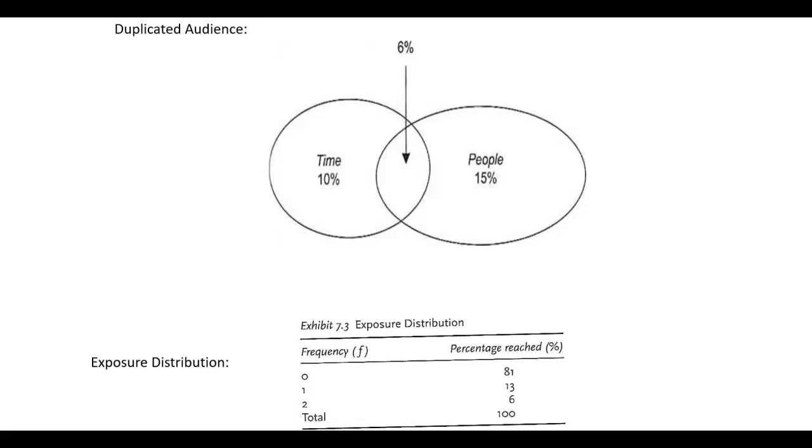19% see it at least once. It's 19 minus 6 see it twice. So 19% see it at least once, 6% see it twice. So 19 minus 6 see it once, so she's right after all. And then that's the frequency, and then the 6% in the middle who get both magazines—I see Time, I see the same ad in People—I saw it twice. That's a two frequency.